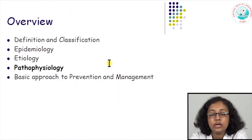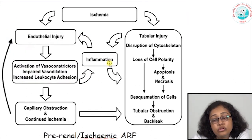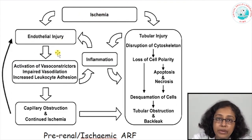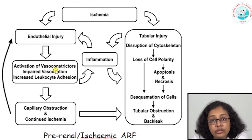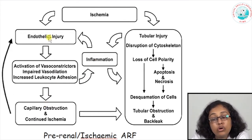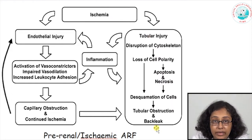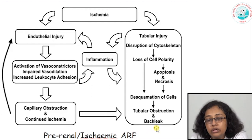Now let us look at the pathophysiology. Ischemia due to decreased renal perfusion is the most common cause of acute renal failure. Ischemia leads to endothelial injury, which causes activation of vasoconstrictors, impaired vasodilatation, and increased leukocyte adhesion. This leads to capillary obstruction and perpetuation of ischemia, which further causes endothelial injury — a vicious cycle. Activation of leukocyte adhesion factors leads to inflammation, which again causes endothelial injury. Ischemia also causes acute tubular injury, leading to disruption of cytoskeleton, loss of cell polarity leading to apoptosis and necrosis, desquamation of cells, tubular obstruction, and back leak. Both inflammation and ischemic injury are at play in pre-renal or ischemic AKI.